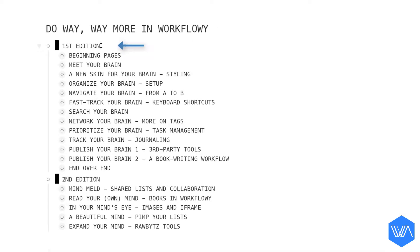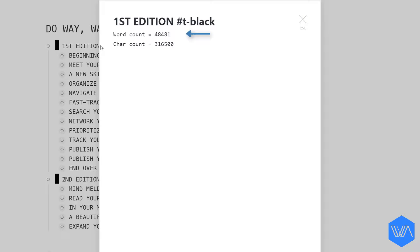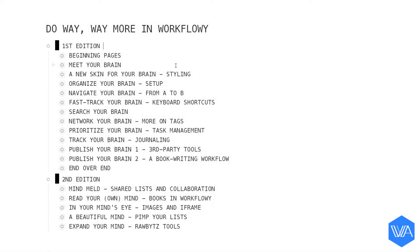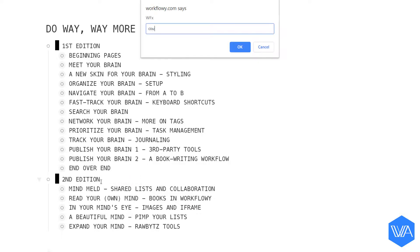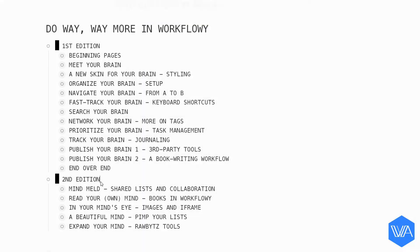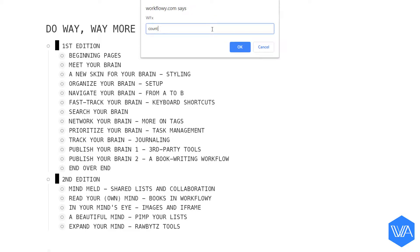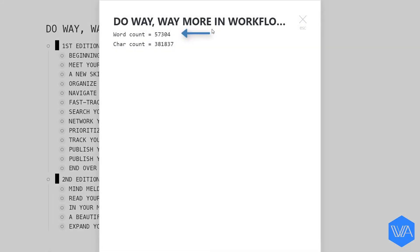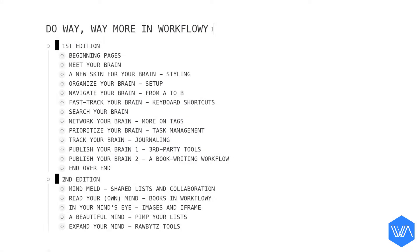If I place my cursor in the first edition list and activate the word count script, you'll see I have a word count of 48,481. And if I place my cursor in the second edition list and use word count again, you'll see that this new material expanded my book by 8,817 words. Placing my cursor in the list title at the top, you'll see that my book has a total of 57,304 words.